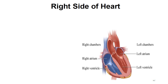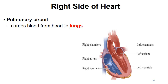Let's focus on the right side of the heart. Blood pools into the right atrium from the rest of the body. This blood is oxygen deficient or oxygen poor. The right side of the heart is called the pulmonary circuit because its job is to take blood to the lungs — pulmonary means lungs. It carries blood from the heart to the lungs. This blood is oxygen poor or deoxygenated and carbon dioxide rich.